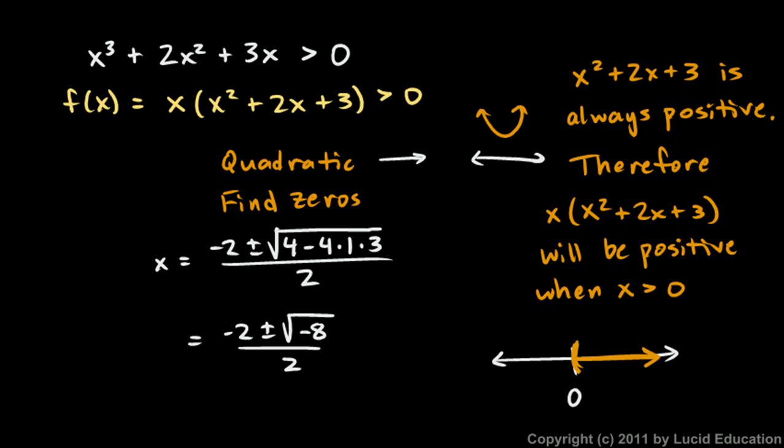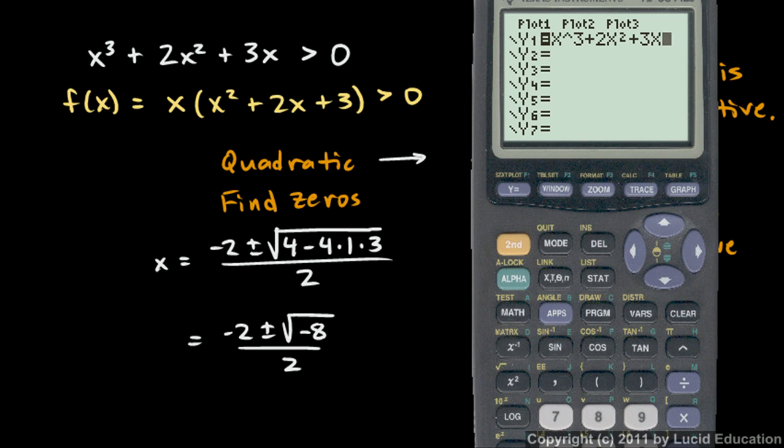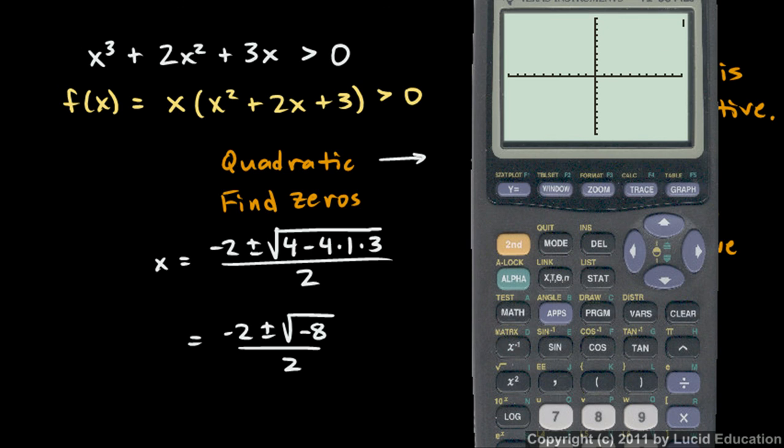You could also look at this graphically. I'll pull up the calculator, and I put in the original function, x cubed plus 2x squared plus 3x. And if we graph that, we can see on the graph where it is greater than zero. So I'll punch graph, and the calculator draws it. And there you see, it goes right through the origin. It has x equals zero as one of its roots, and we see that in our factors. And it is positive. It is up above the axis when x is greater than zero.